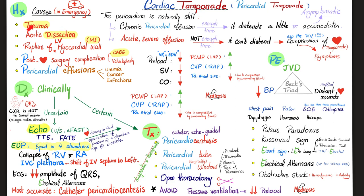Cardiac tamponade could be caused by trauma, aortic dissection, rupture of the free wall of the ventricle after myocardial infarction, post-surgery, pericardial effusions, etc. Don't forget Beck's triad of jugular venous distension, hypotension, and distant muffled heart sounds. Do not forget electrical alternans on EKG and collapse of the right ventricle and right atrium on echo, as well as IVC plethora because there is a ton of blood in the inferior vena cava.